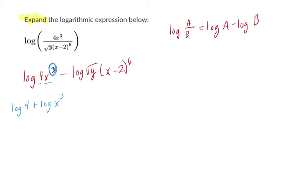And then we have to subtract the next piece. This is the square root of y times x minus 2 to the 6th. So again, we could split it, but be careful. The minus applies to everything that we are writing out. So the log of the square root of y and the log of x minus 2 to the 6th.